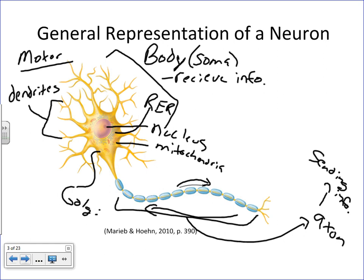There are receptors and ion channels all along the cell membrane of the dendrites. Dendrites essentially increase the surface area of the cell body — the more dendrites, the more communication that can take place with this cell. How nerves communicate is they send an electrical impulse down their axon. The dendrites allow more synaptic connections to be made with the neuron.